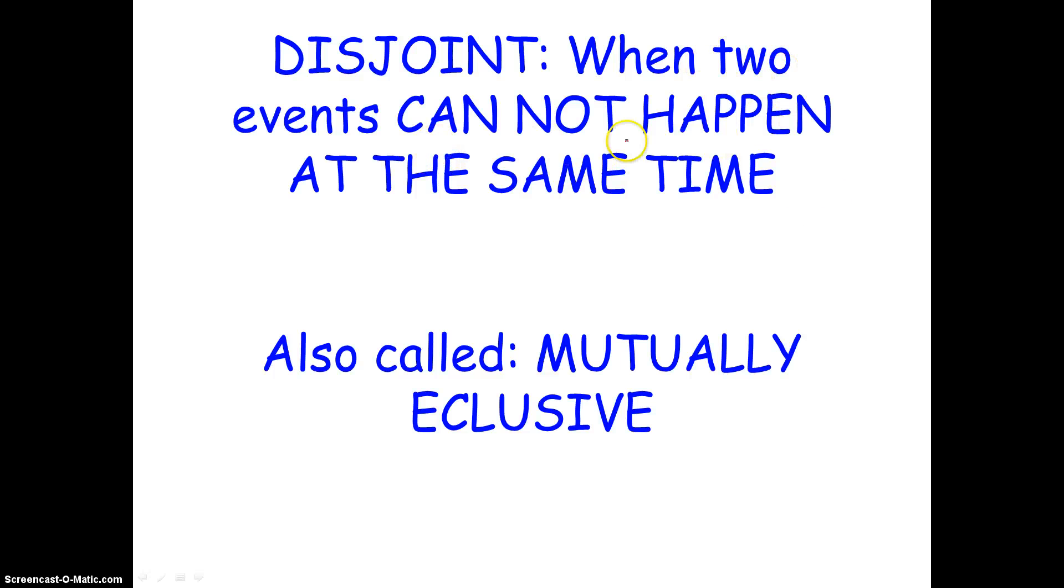When two or more events cannot happen at the same time. Again, a disjoint event is an event that can't happen at the same time as another event. And another common word you will see to say something is disjoint is mutually exclusive. Yes, I know I missed the X, forgive me for the spelling. But this isn't spelling, this is AP stats. When you see something disjoint, it's also going to be called mutually exclusive, and they both mean that two or more events cannot happen at the same time.